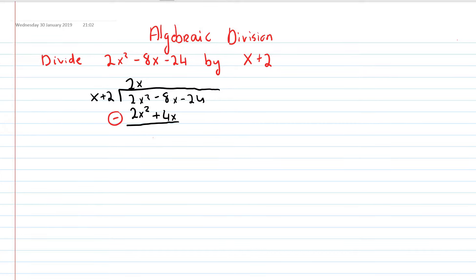Now I'm going to take away. So 2x squared minus 2x squared is 0. Some people say they cancel out. Same thing. And minus 8x minus 4x is minus 12x.